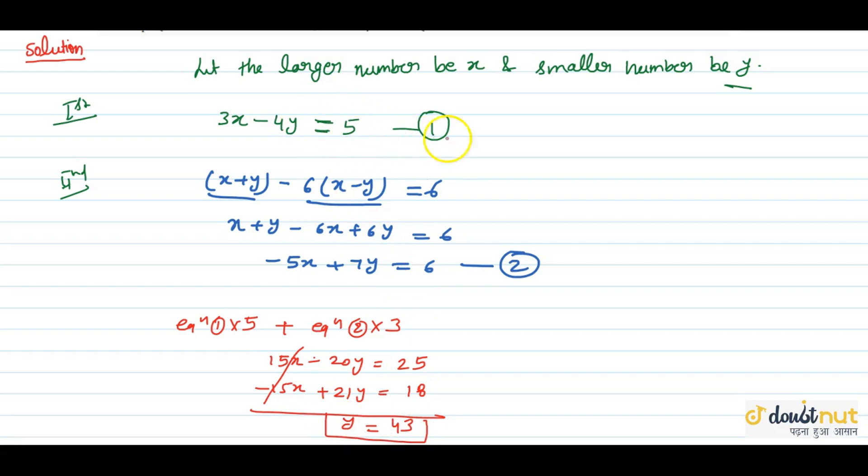Now x: 3x equal to 5 plus 4y. So y equal to 43. 4 into 43: 5 plus 4 times 43 is 4, 3, 12, 4, 4, 16, 1, 172. So 3x equal to 177, so x equal to 59.